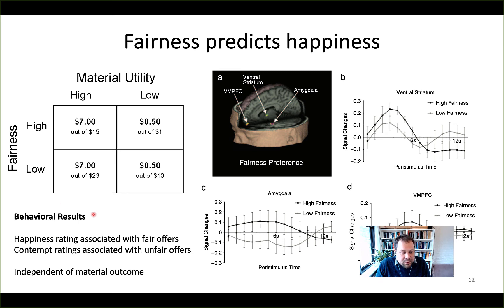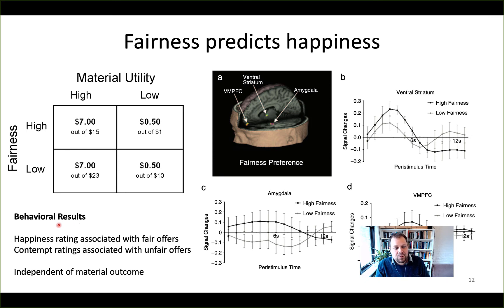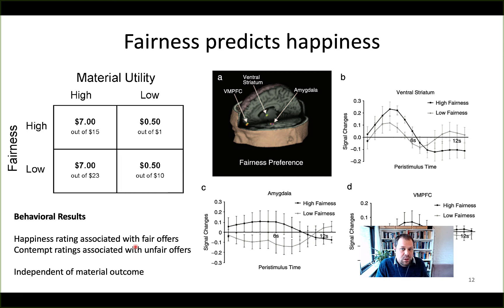Another wonderful aspect of their study is that they directly associated happiness ratings with fair or unfair offers. What they find is that happiness ratings are significantly associated with fair offers, and contempt ratings are associated with unfair offers. Even when controlling for the material outcome, these associations remain within the regression — providing a direct link between emotional response and the fairness of the offer, which is important to demonstrate in the context of the ultimatum game.